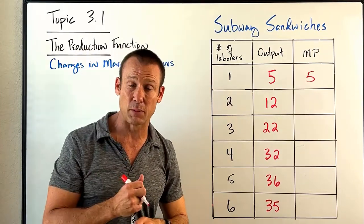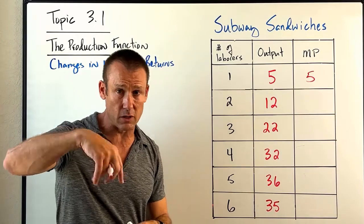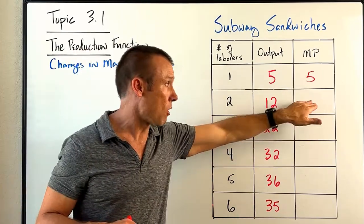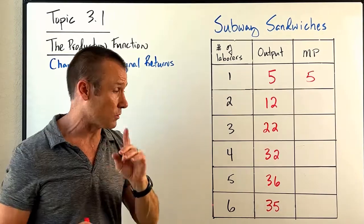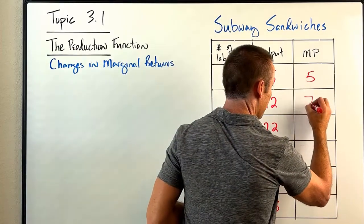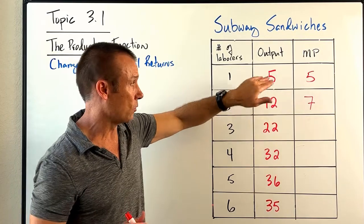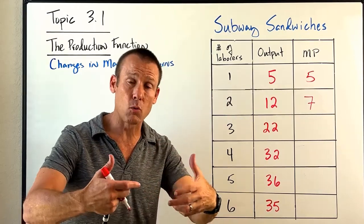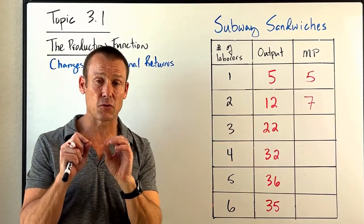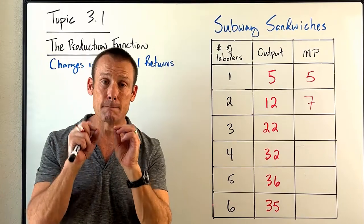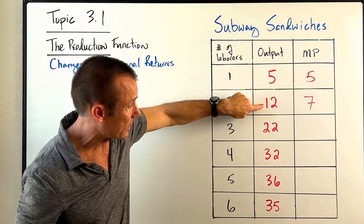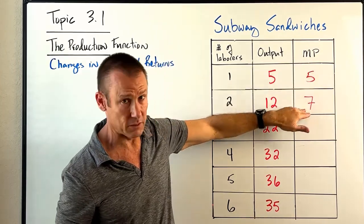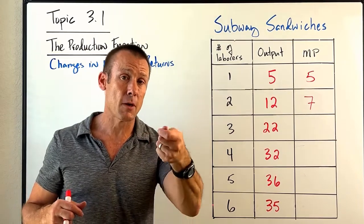Now we hire the second worker and get some specialization: one person makes sandwiches, the other checks people out, answers the phone, and gets supplies from the back. In total they can now make 12 sandwiches per hour. The change in output from adding one more worker — our marginal product — is seven (from 5 to 12). This means the firm is encountering increasing marginal returns, because the marginal product is getting larger.